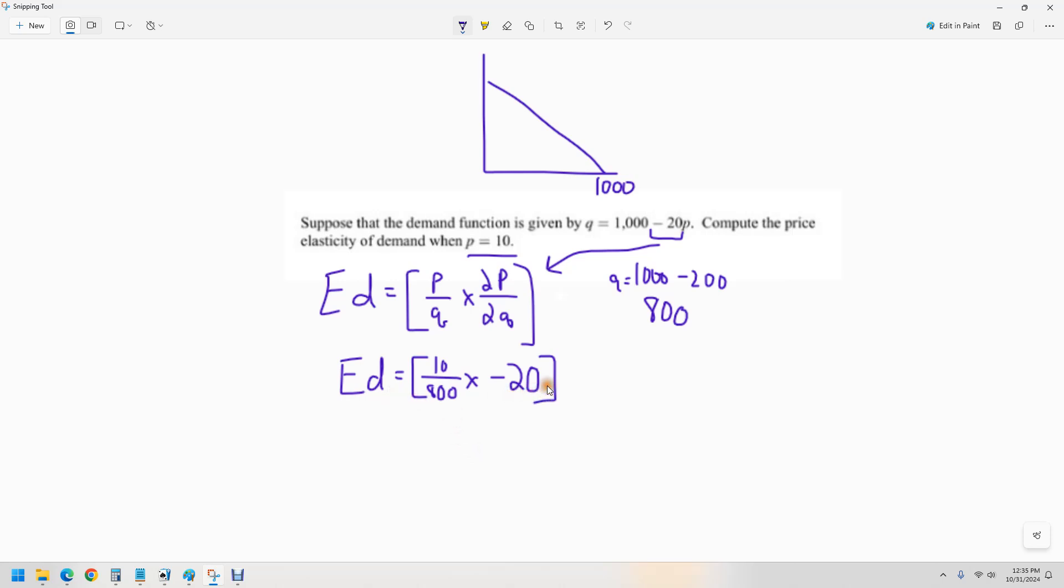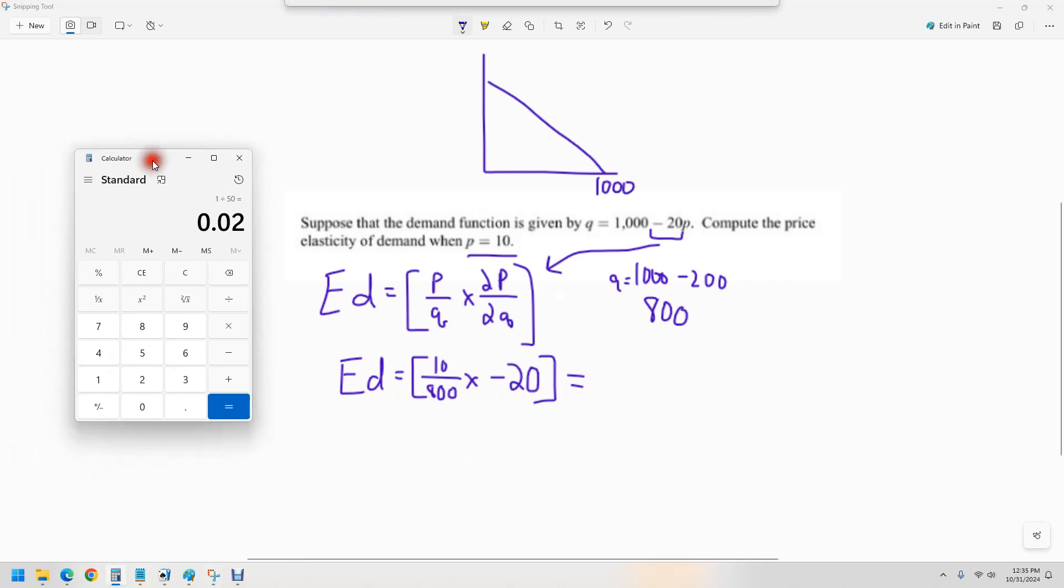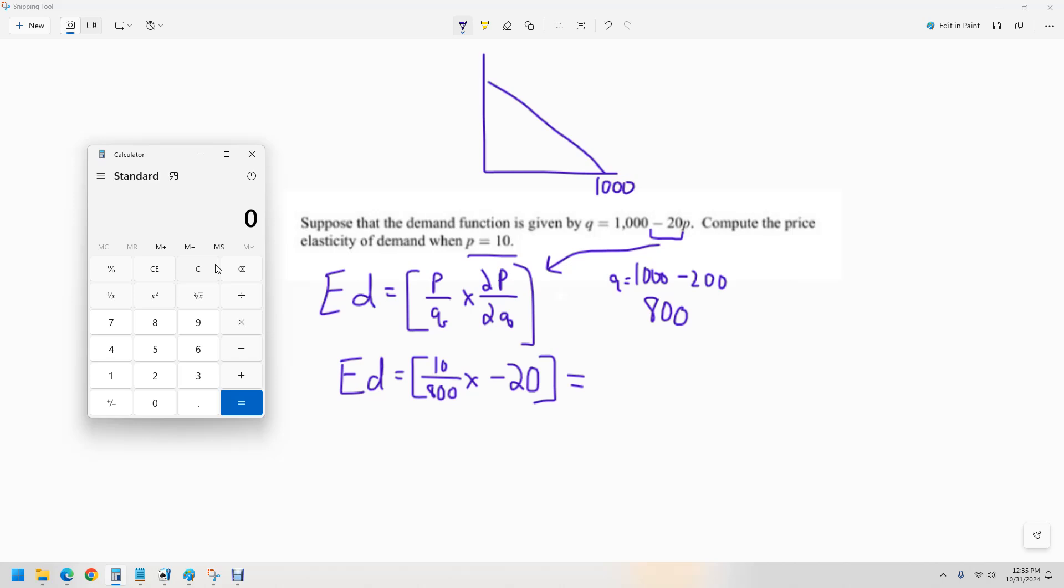So this is our formula here. Solve for this. I'm going to give you 10 over 800, and I'm going to multiply that by negative 20. And this gives me the number that is negative 0.25.